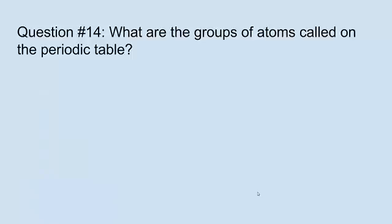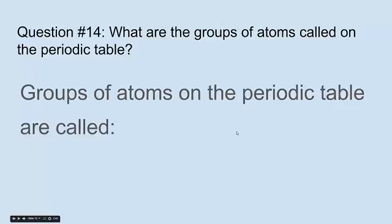Question fourteen: What are the groups of atoms called in the periodic table? Groups of atoms in the periodic table are called periods. That's why they call it the periodic table.